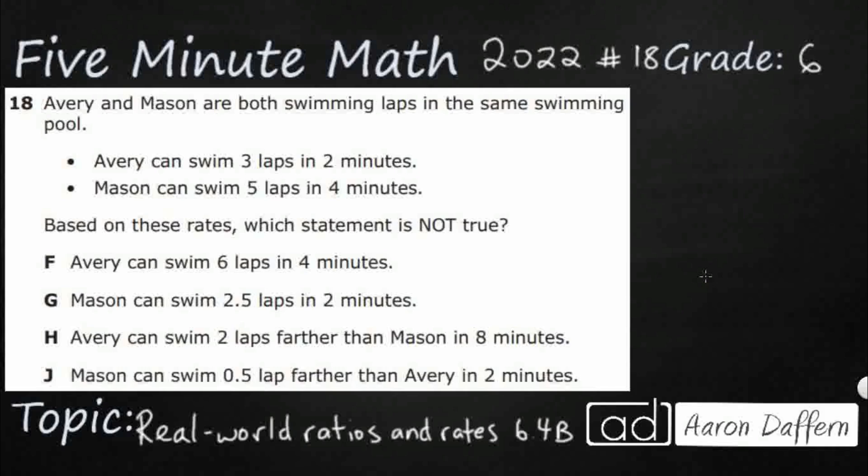So we've got Avery and Mason, they're both swimming laps in the same swimming pool. It's the same distance, same size. Avery can swim 3 laps in 2 minutes, and Mason can swim 5 laps in 4 minutes. We're looking for a false statement.